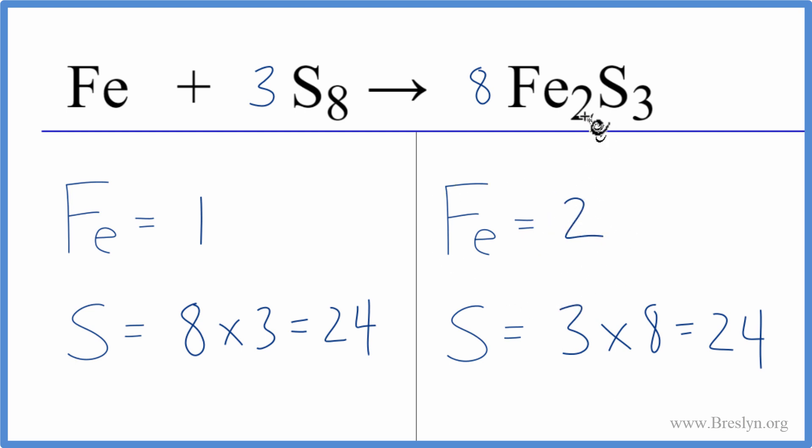Then I need to update my irons because I have 2 times 8, that gives me 16 irons. But like we said, we're doing the irons last. All we need to do is put a 16 in front of the Fe. 1 times 16, that'll give us 16 iron atoms.